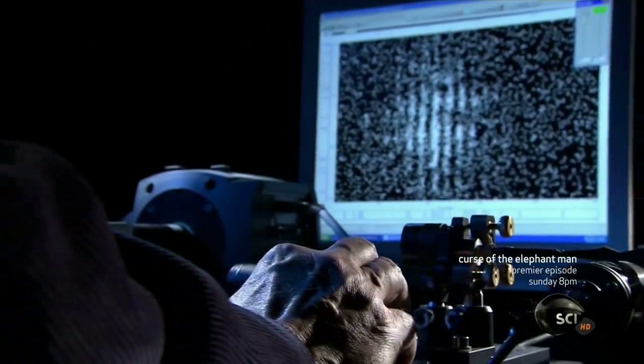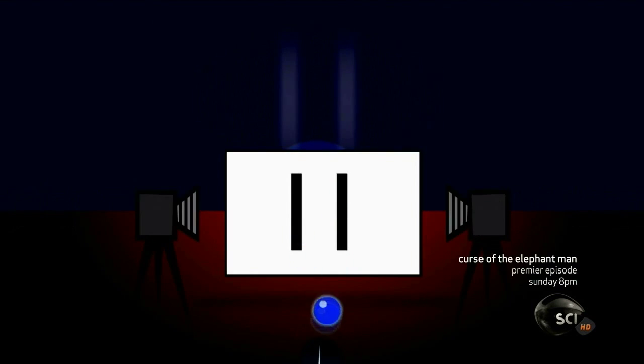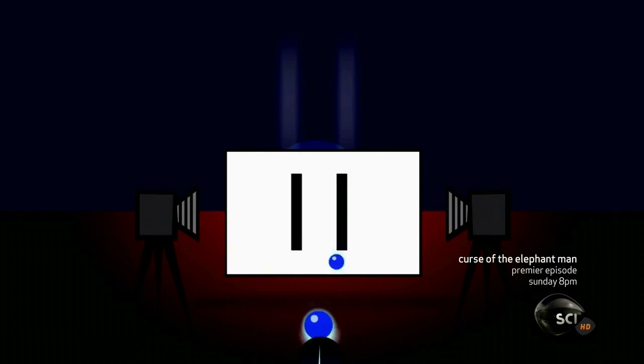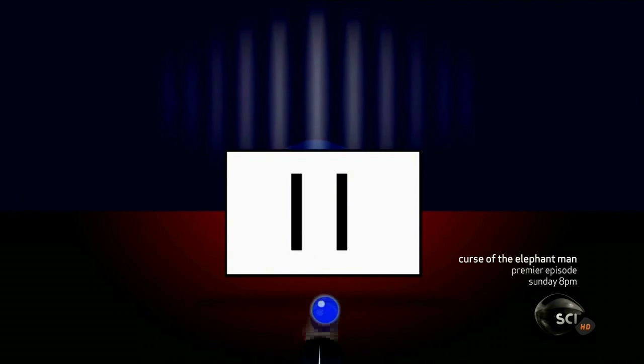But strangest of all is what happens when you put detectors next to the slits. When the photons are being watched, the wave pattern disappears. Take away the detectors and the wave pattern comes back.